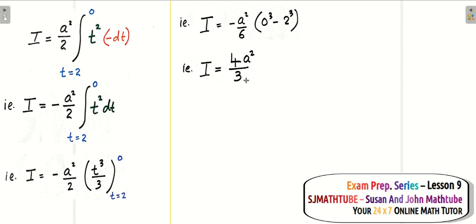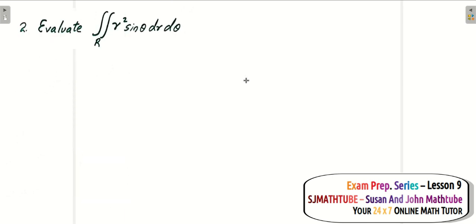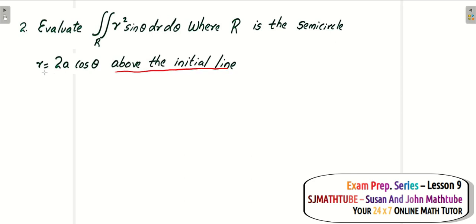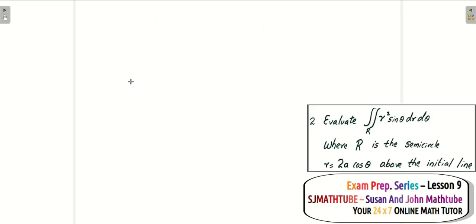Let's check out one more problem. Is it a polar integral or a Cartesian integral? Of course it is polar because it is in terms of dr and d theta — the polar variables are used. The region of integration is a semicircle above the initial line of r equals 2a cos theta. You should be very good with polar curves and be able to identify the equation along with the graph.